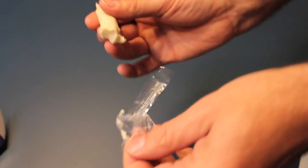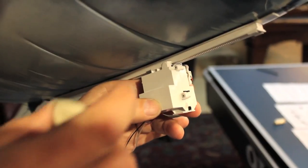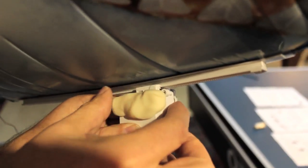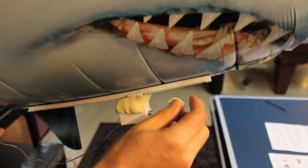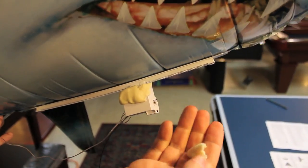Now you need to make your fish neutrally buoyant. Take some putty and attach it to the pod motor. Take some putty off or put more putty on until the fish neither rises nor falls.